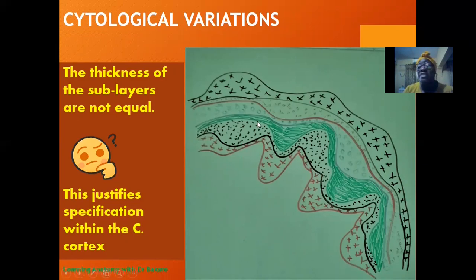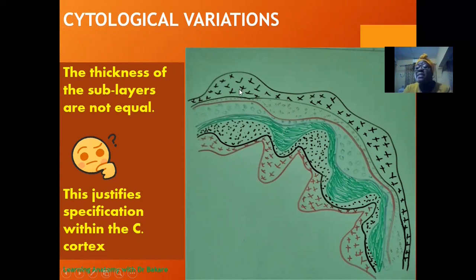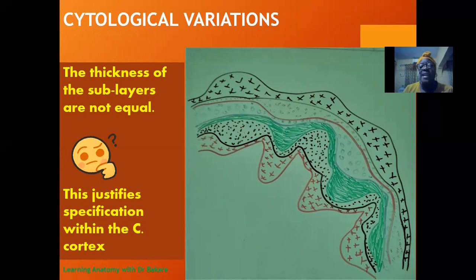There is a form of cytological variation within the layers. The layers are not uniform across the entire circumference of the cerebral cortex — they vary in terms of thickness. This is because different regions of the cerebral cortex are programmed for specific functions, so the quantity of cells deposited within them depends on the functions they are to exhibit.